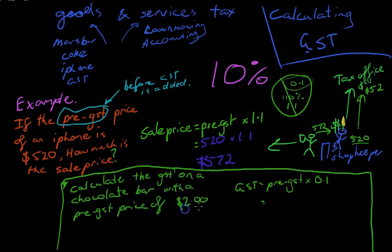Now, our pre-GST price in this question is $2. And we're going to multiply it by 0.1. That means that we're going to end up with a GST price... a GST, that is a tax payable, of $0.2.